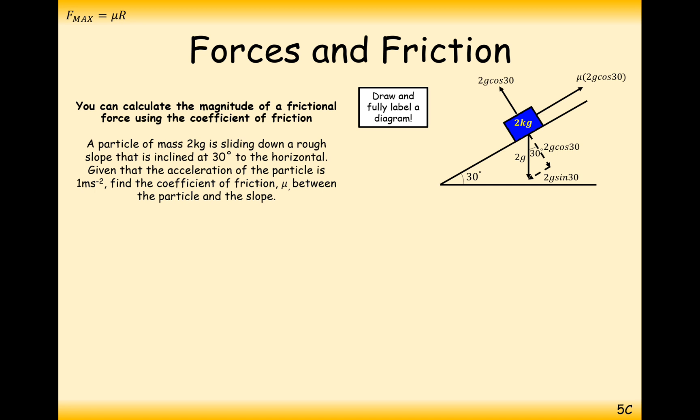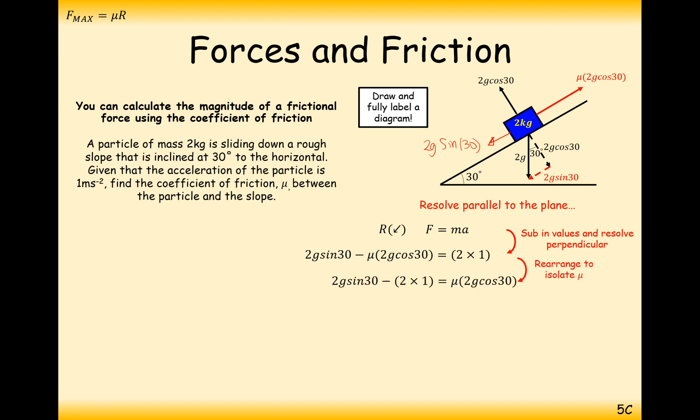Now we can use the information that we are sliding down the slope at 1 metre per second squared acceleration. Resolving the forces going down the slope, we're going to have the downward force of the weight of this block here being 2g sin 30. Take away that frictional force that's acting upwards. It's 2g sin 30 minus mu 2g cos 30, equals mass times acceleration. That would be a mass of 2 and acceleration of 1. And now all we've got to do here is rearrange to work out what mu needs to be.